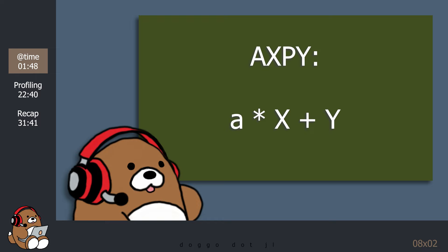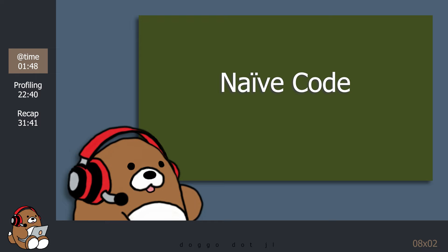As a motivating example, we're going to use AXPY. AXPY stands for A times X plus Y, where A is a scalar and X and Y are vectors. This is a common equation that's used in many different subjects, like linear algebra and machine learning. We're going to start with some naive code that one might write when first learning a programming language, and then we'll iterate over this code several times to see how fast we can get AXPY to run in Julia.